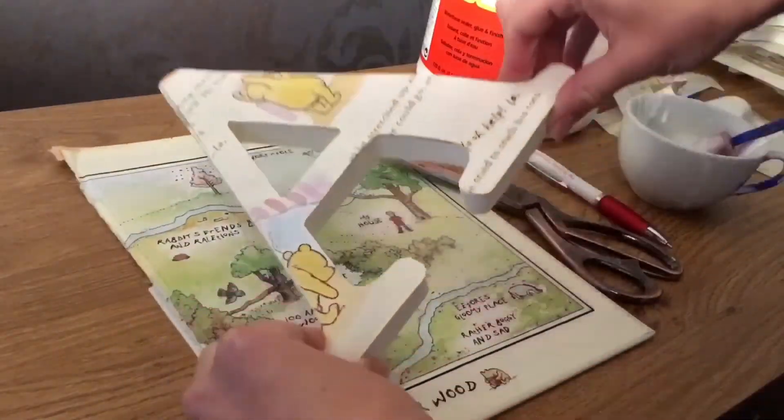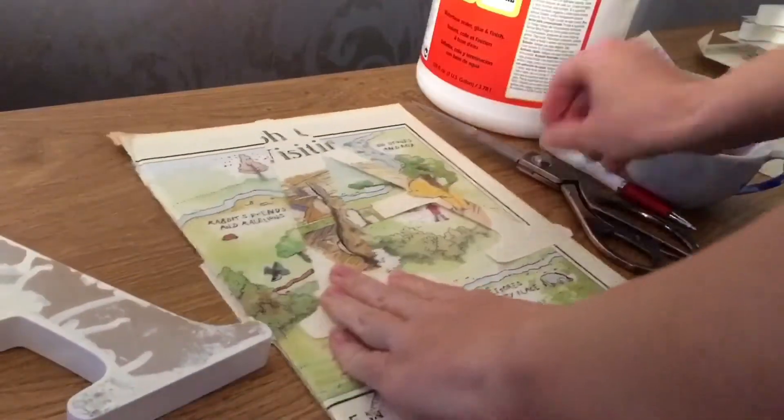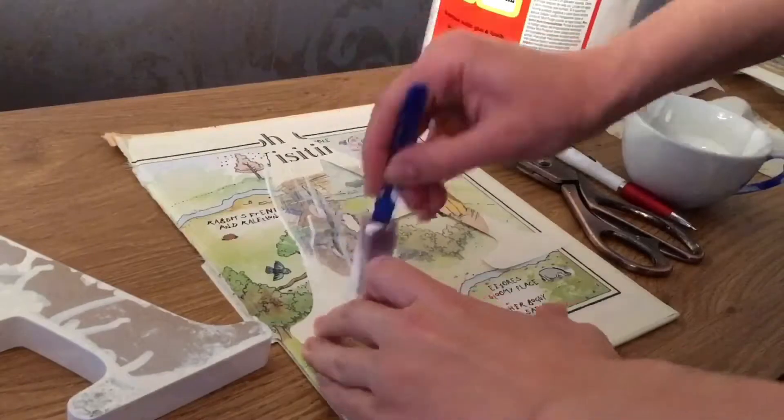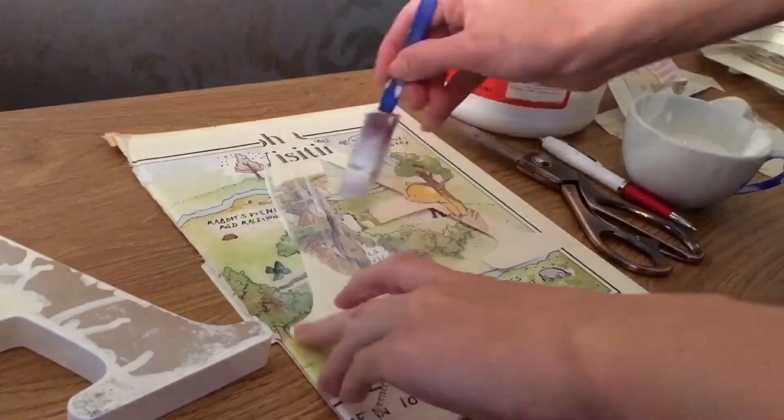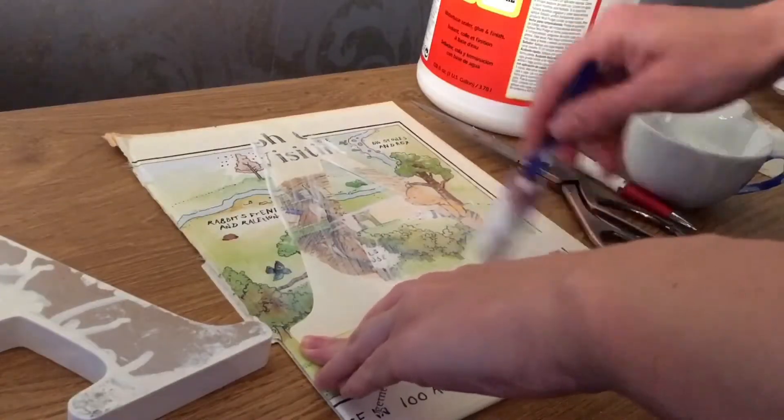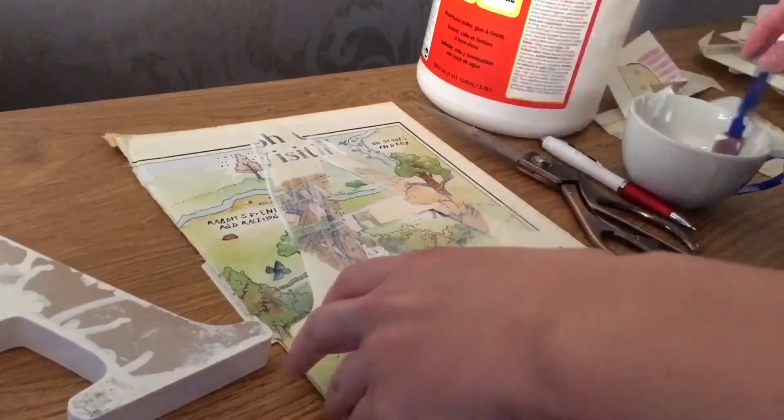You need to get something to lean on because you don't want any Mod Podge getting anywhere covered. You want to protect your surface and then apply the Mod Podge to the paper that you've just cut out.